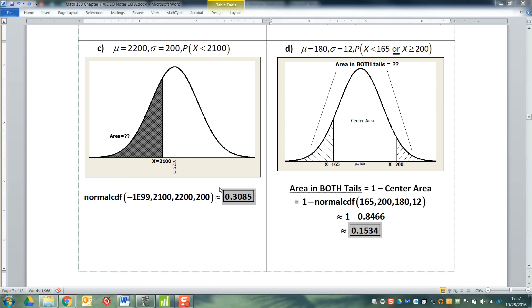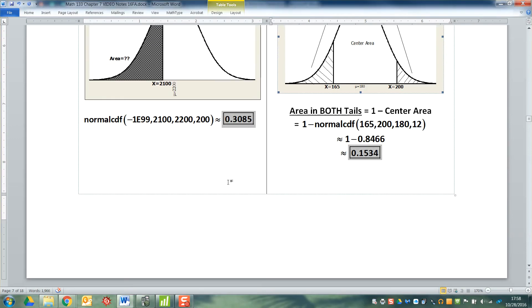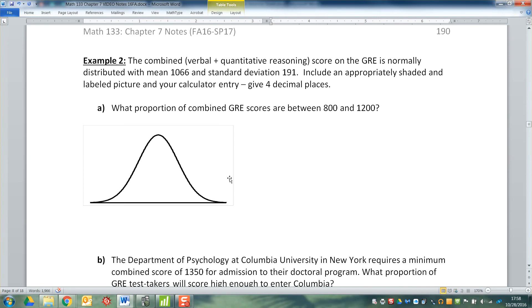So we've learned how to find the area under a normal curve, but all these problems were devoid of context. There was no reasoning behind what we were doing. So our next problem is going to have some context and reasoning.